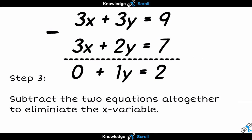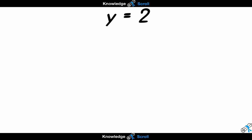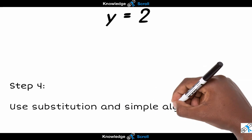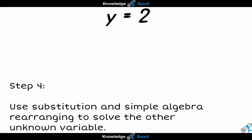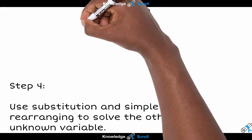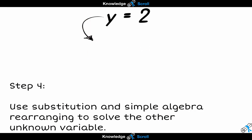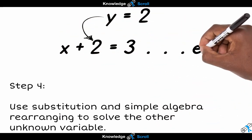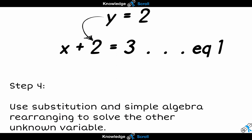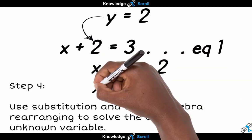Now that we know the value of y equals 2, it is going to be easy for us to solve for the value of x. We can do that by taking the value of y and substituting it into the first equation. So you should have x plus 2 equals 3, and with some simple algebra rearranging you get x equals 3 take away 2, and x equals 1.